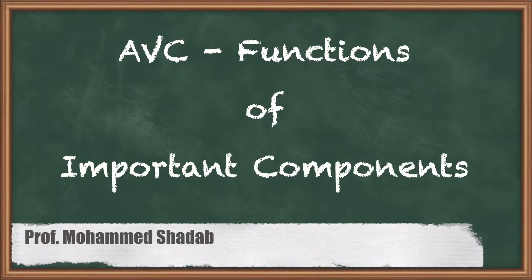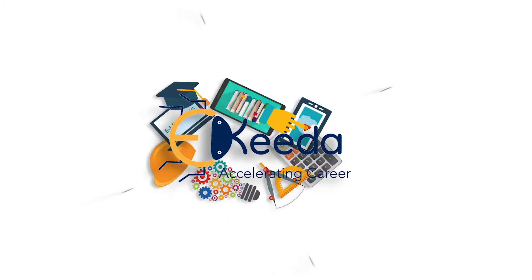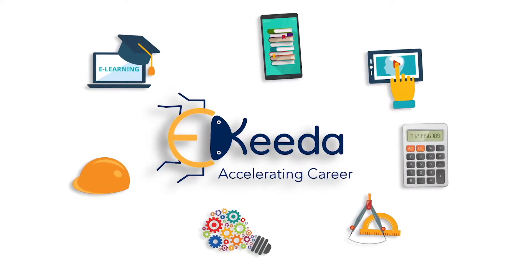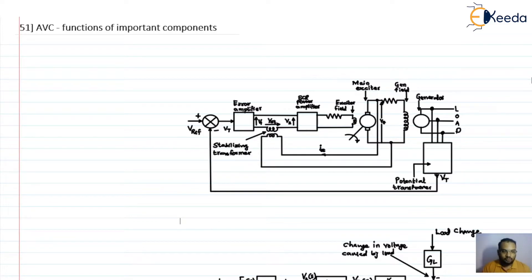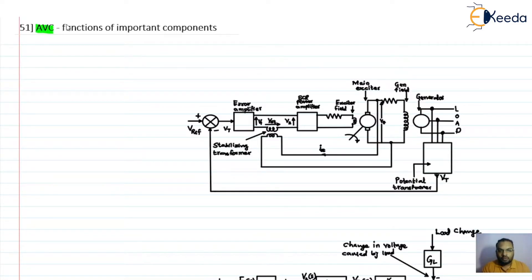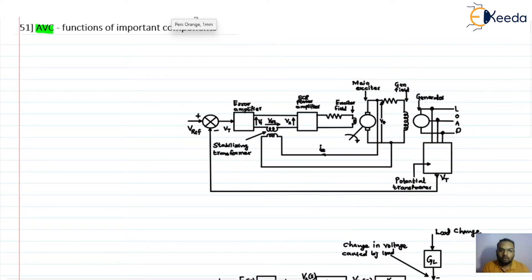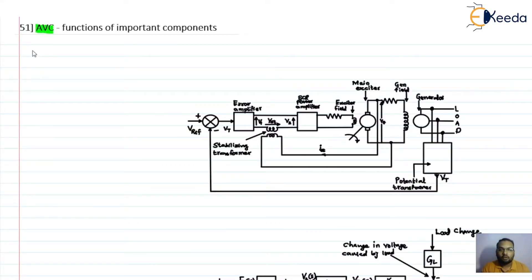Hello friends, in this video lecture we are going to discuss the functions of important components which are used in automatic voltage control. In the last lecture we discussed the working of AVC, which is used in the power system to maintain the output voltage of the alternator. Now in this lecture we are going to discuss the functions of the important components. Let us first list out the important components in the AVC unit.